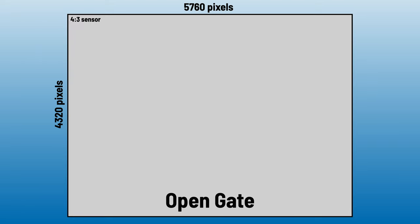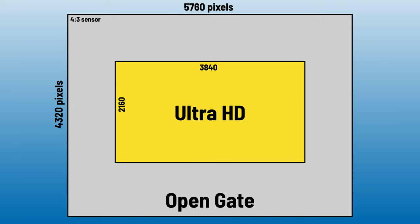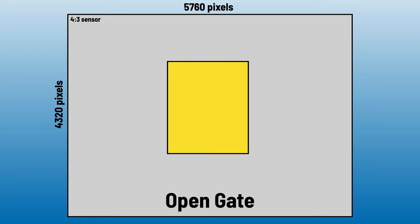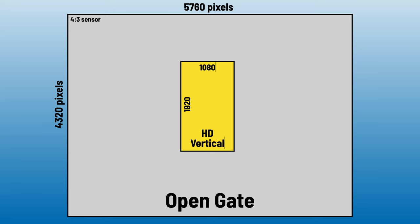OpenGate on the GH6 is 5760 pixels wide by 4320 pixels tall, where all you need for Ultra HD is 3840 by 2160. This gives you a ton of options for reframing in post, and the nearly square 4:3 aspect ratio is ideal for cropping both landscape and vertical video from the same footage.